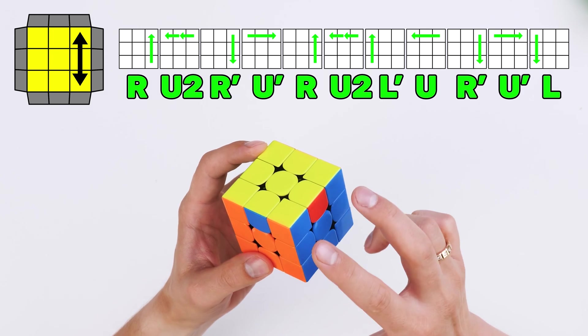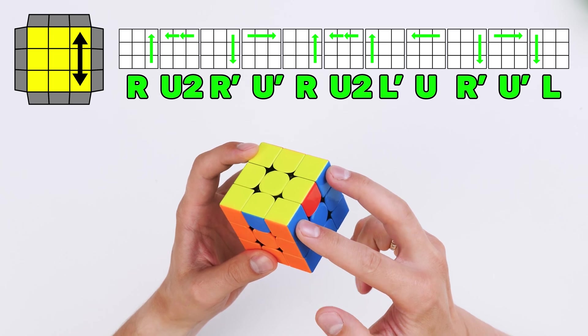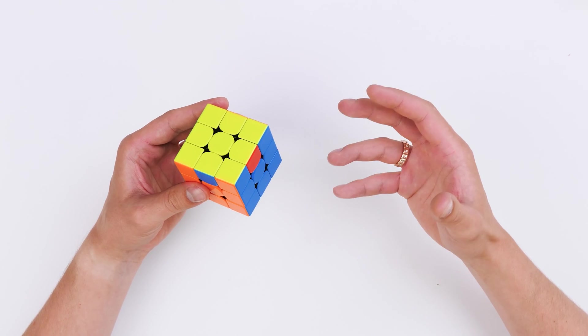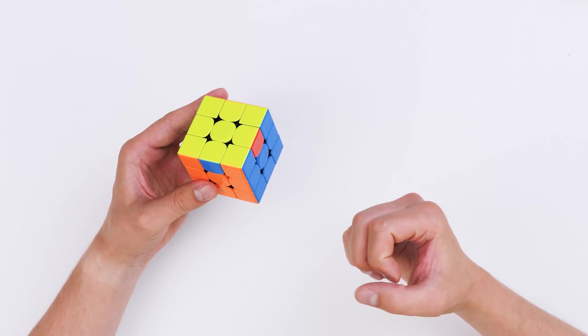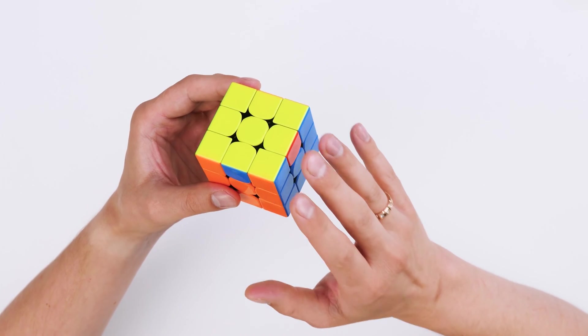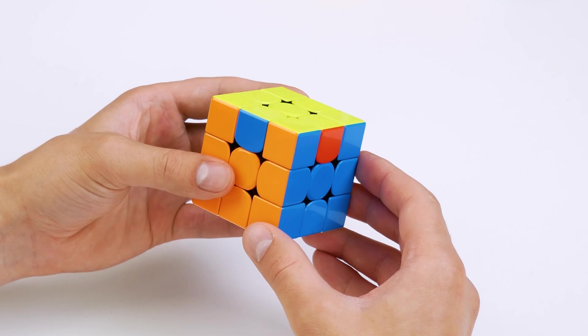And as you can see, this algorithm has swapped these two corners. I understand that so far it sounds difficult, but I'm sure that right now you will be able to master this algorithm. I want to tell you how I memorized these motions when I first learned J-perm algorithm. I will try to explain, repeat after me.